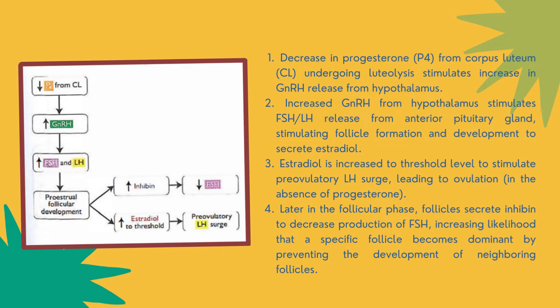First, the decrease in progesterone (P4) from corpus luteum undergoing luteolysis stimulates increased GnRH release from the hypothalamus. Second, increased GnRH from the hypothalamus stimulates FSH and LH release from the anterior pituitary gland, stimulating follicle formation and development to secrete estradiol. Estradiol is increased to threshold level to stimulate the pre-ovulatory LH surge leading to ovulation.